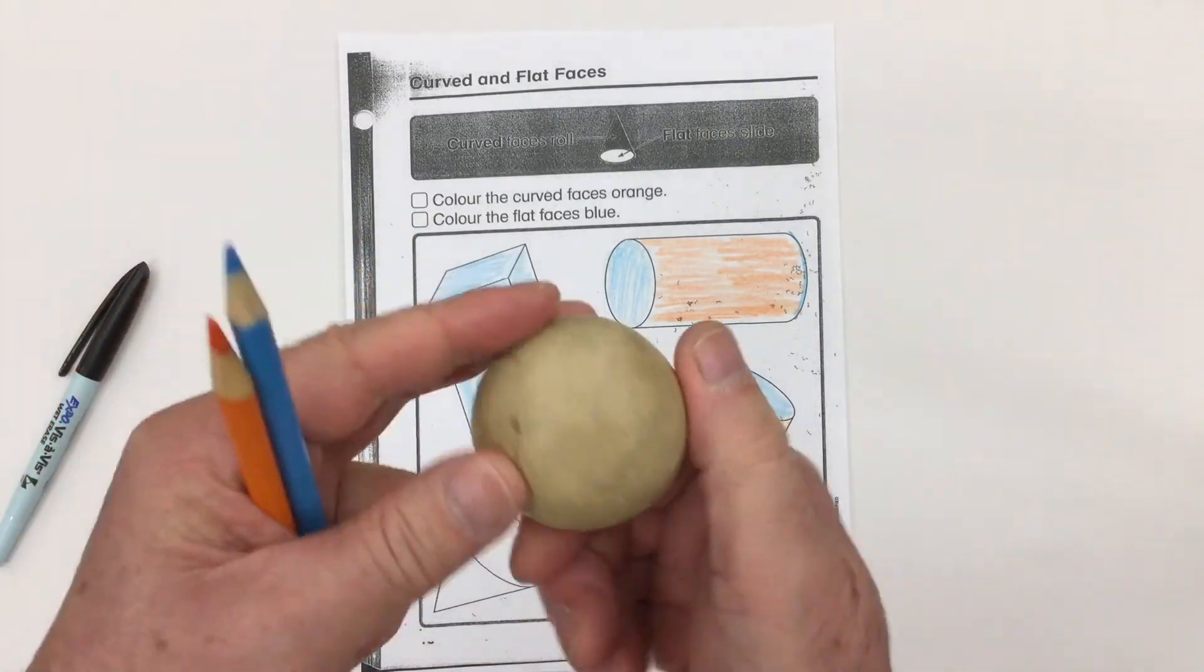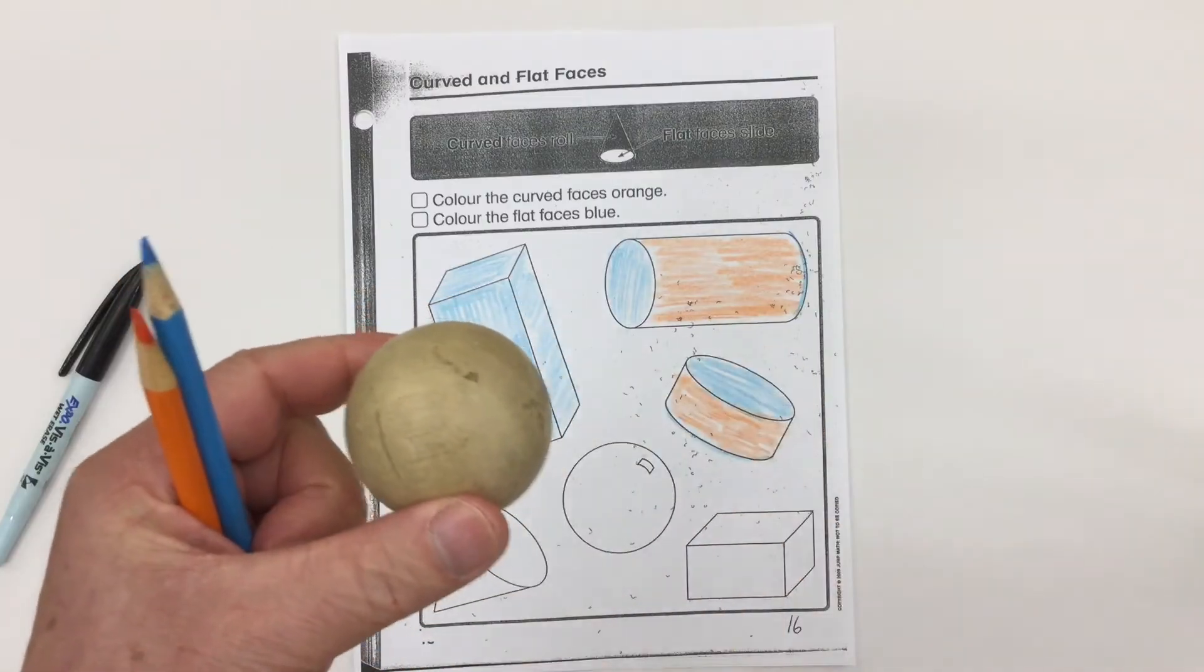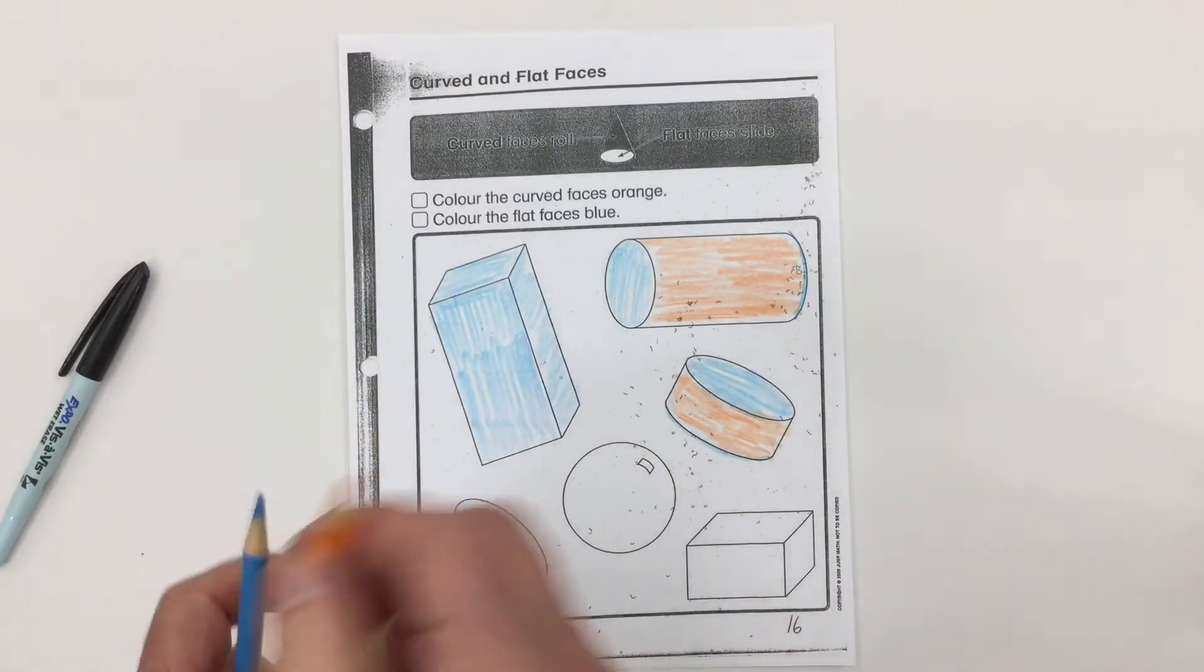Here we've got a sphere and it's only round curved sides. There are no flat faces, so this one is going to be orange.